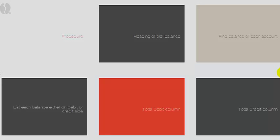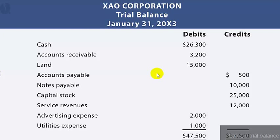We then wait with bated breath to hope that both sides equal one another — if they're not equal, usually we've made a mistake. Here is an example of a trial balance. You can see the name of the business, the date, all the debit balances on one side, all the credit balances on the other, and at the bottom both debits equal credits — so at least in that sense it's been done correctly.